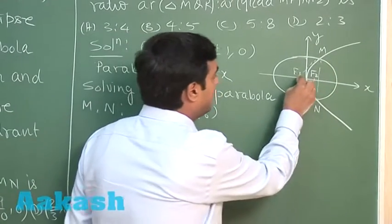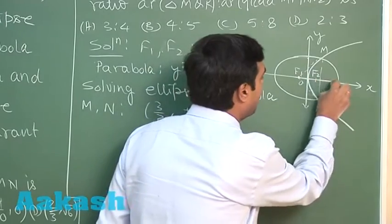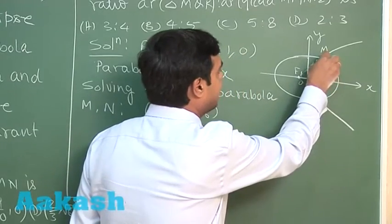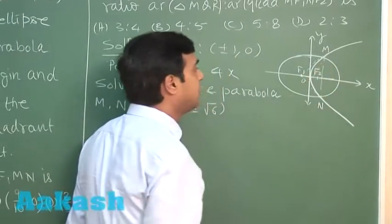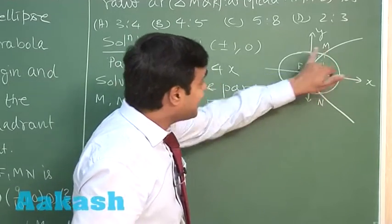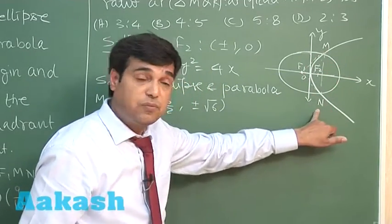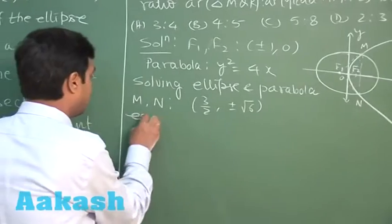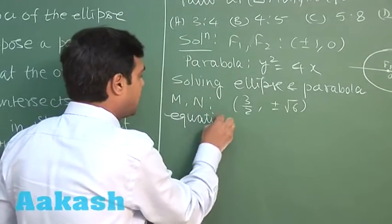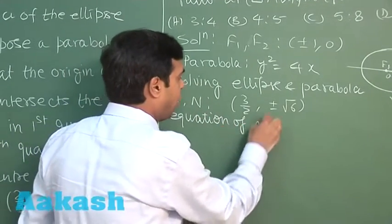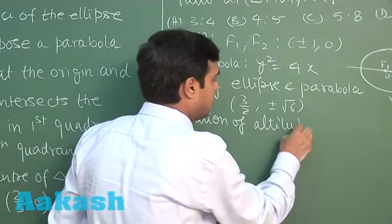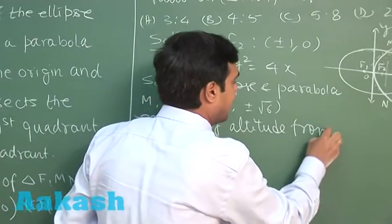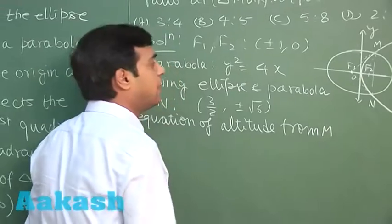Right, clearly from this vertex, this is the altitude. From this vertex, we can say altitude like this. From vertex M, we can write the equation of altitude.